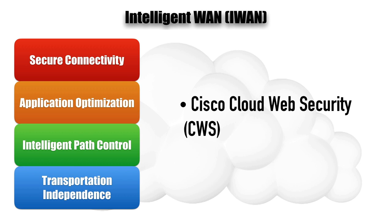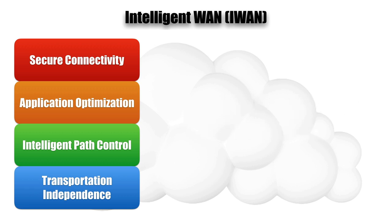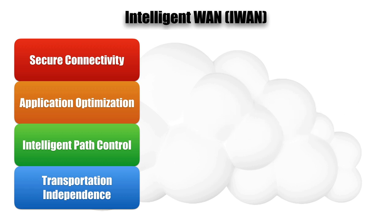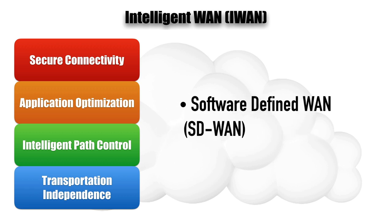That's an overview of what the Cisco Intelligent WAN can do. Another related term worth knowing is the software-defined WAN. You may be familiar with SDN — software-defined networking — where routers, switches, firewalls, and other devices get controlled by a controller.